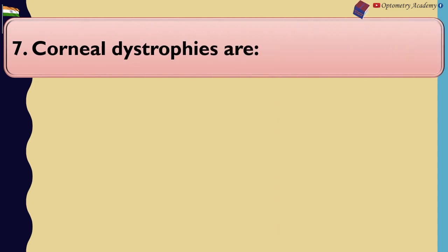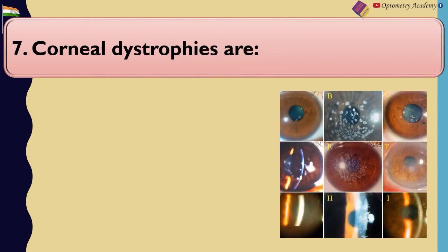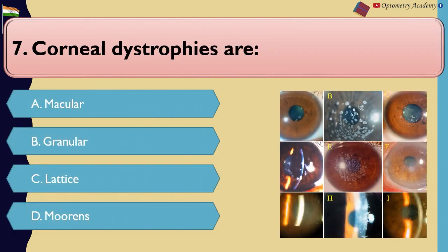Corneal dystrophies are: A. Macular. B. Granular. C. Lattice. D. Meesmann's.